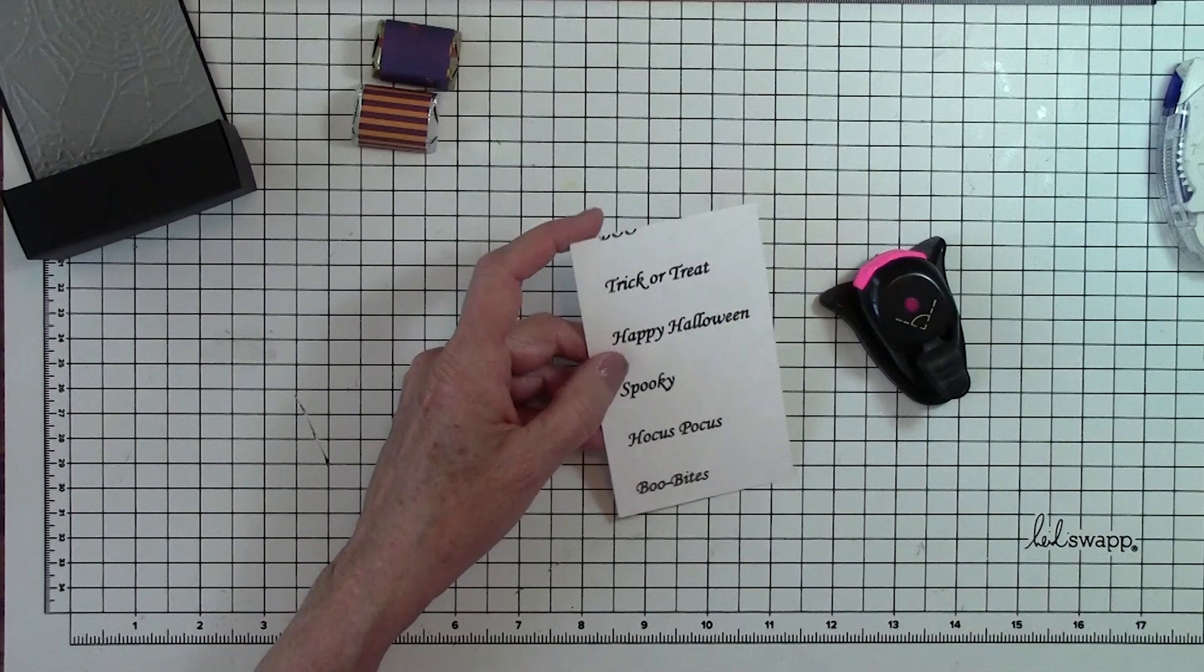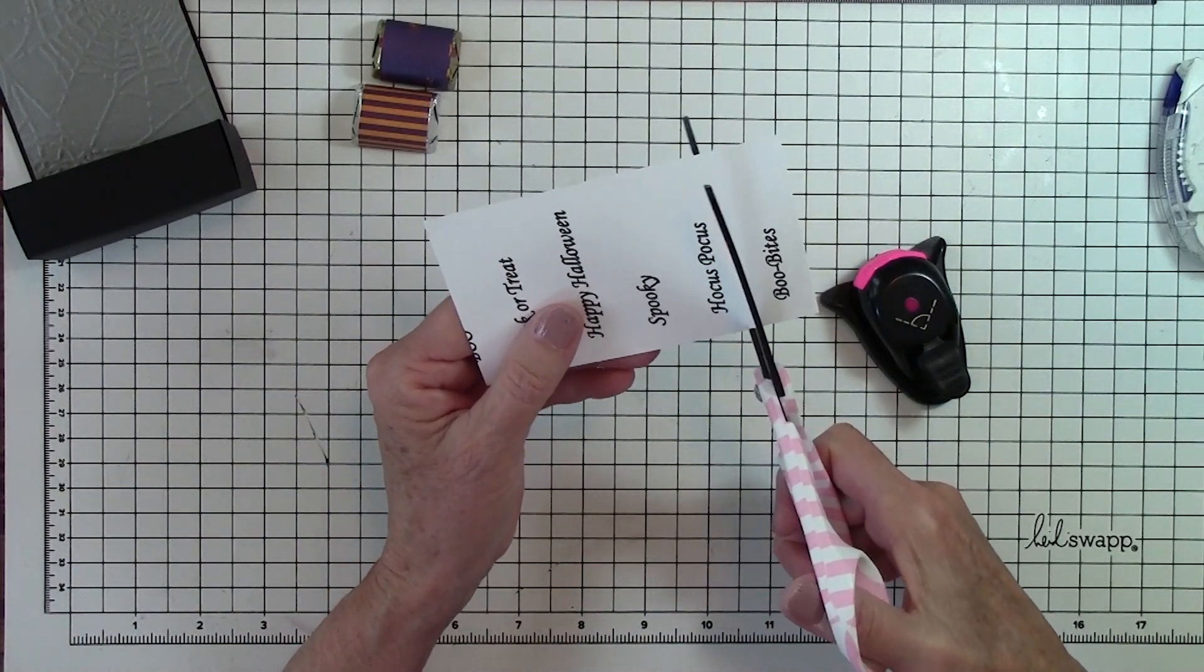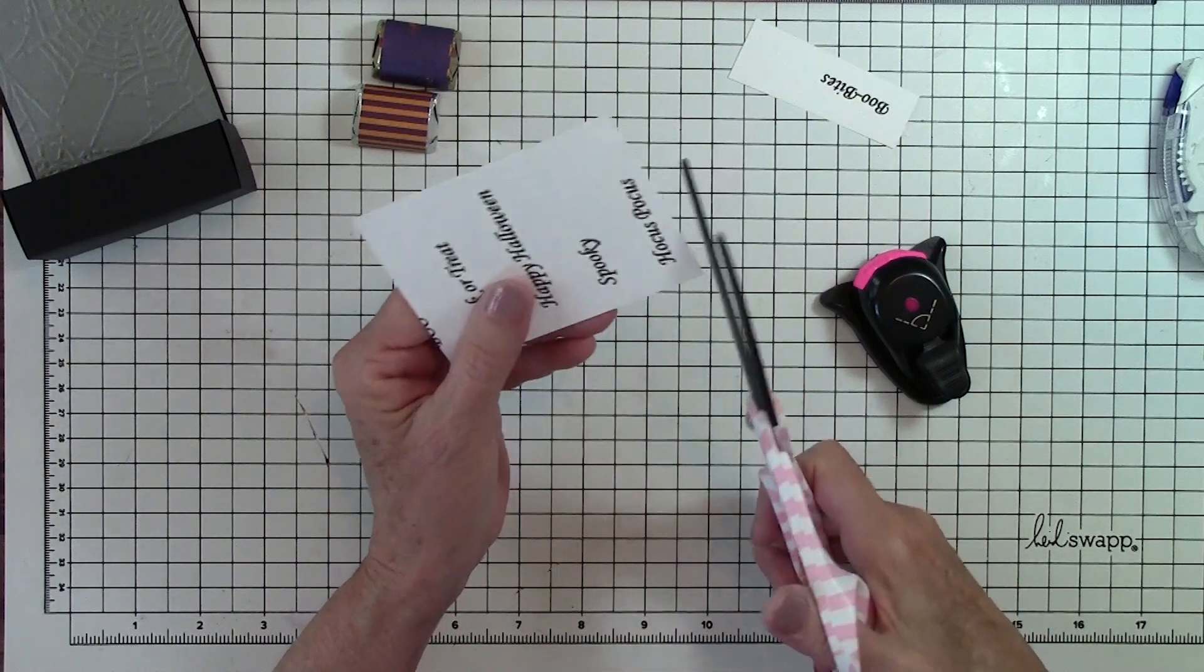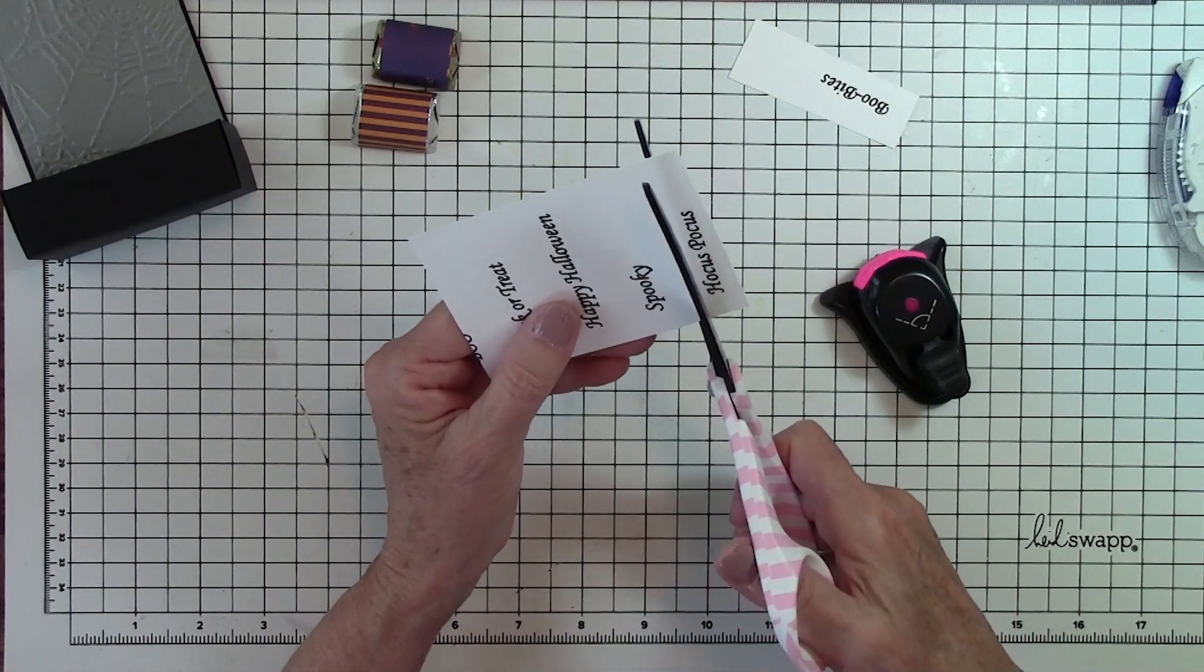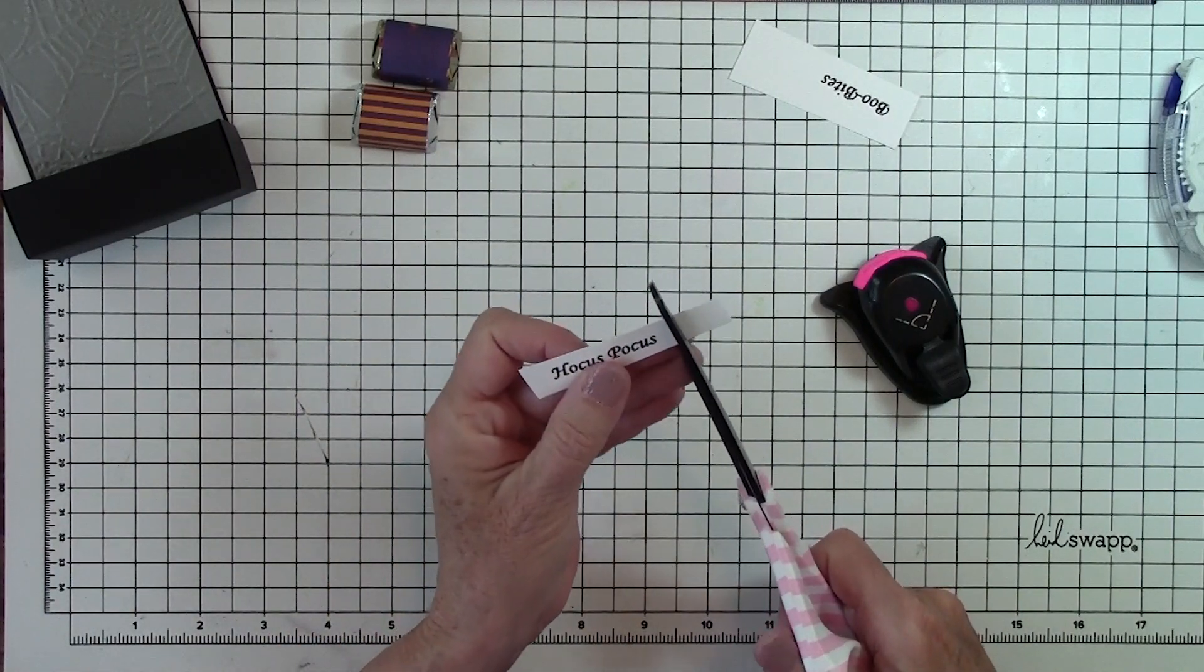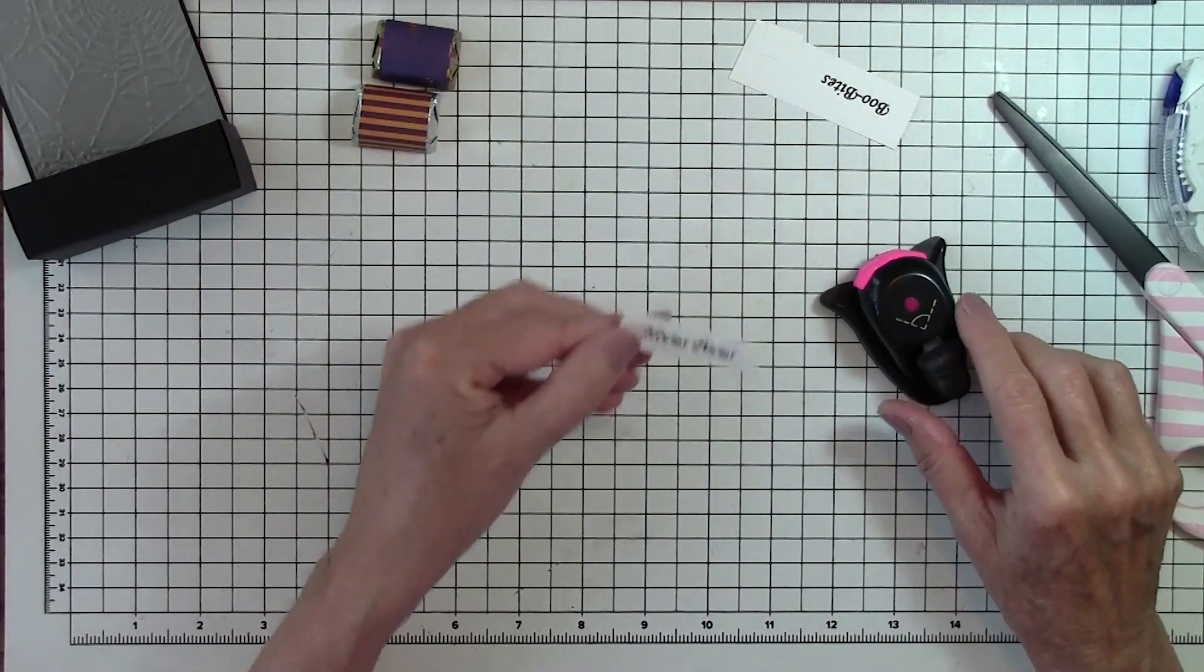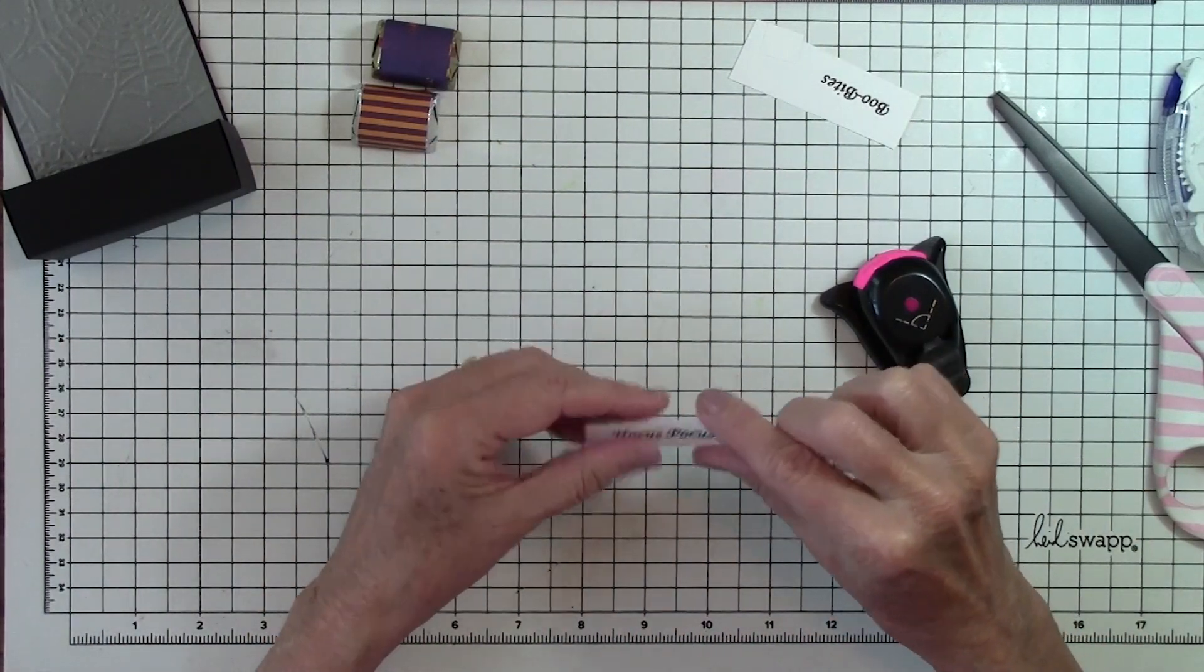And now I have some words. I kind of like hocus pocus this time. So let's just cut it. And I'm not cutting it, I'm just using a scissor. So it's not going to be even. So I purposely did it so that it's smaller on one side.